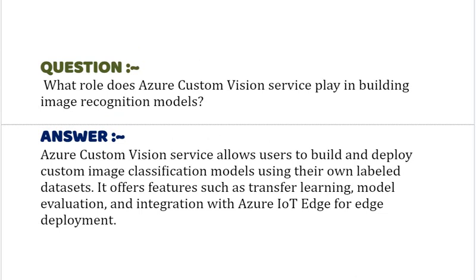Our next interview question is: What role does Azure Custom Vision Service play in building image recognition models? Your answer should be: Azure Custom Vision Service allows users to build and deploy custom image classification models using their own labeled datasets. It offers features such as transfer learning, model evaluation and integration with Azure IoT Edge for edge deployment.